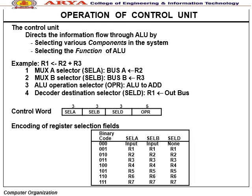Operation of the control unit: The control unit directs information flow through the ALU by selecting various components in the system and selecting the ALU function. For example, R2 + R3 → R1 means multiplexer A selects R2 to bus A, multiplexer B selects R3 to bus B, the ALU operation selector performs ADD, and the output bus transfers to R1 via the decoder and destination selector.